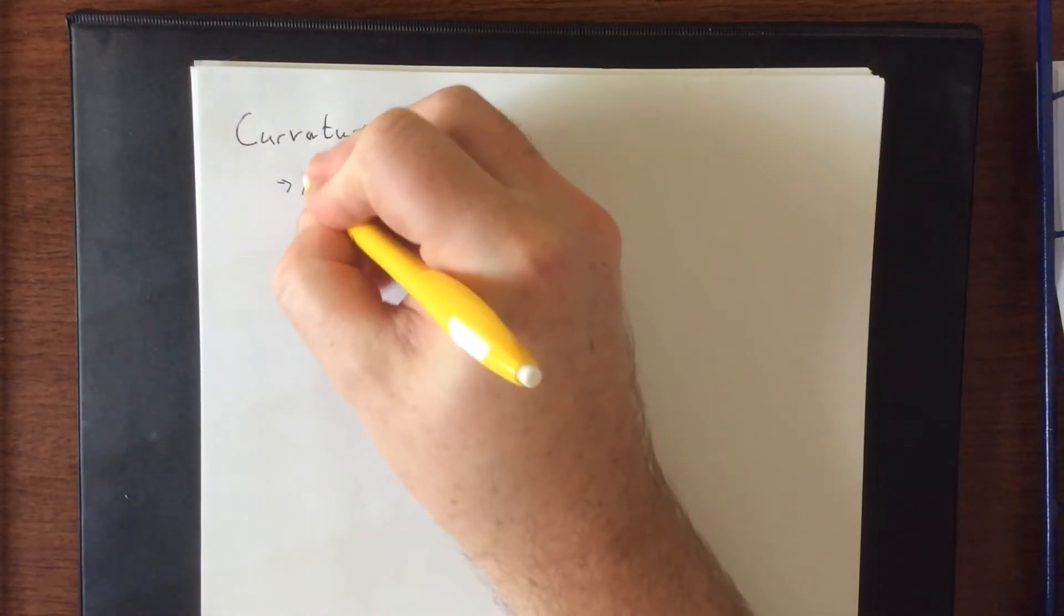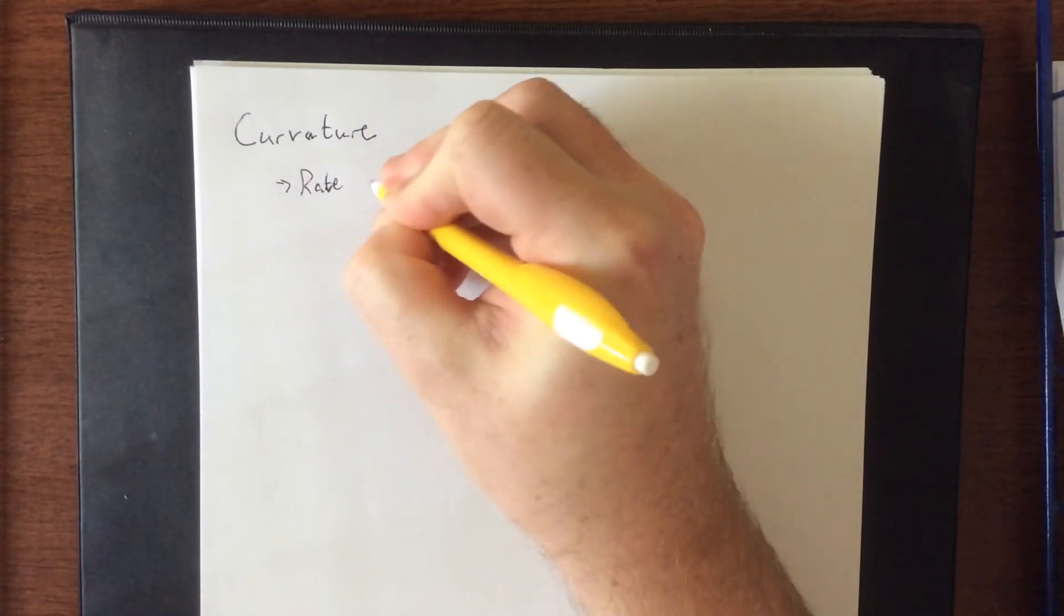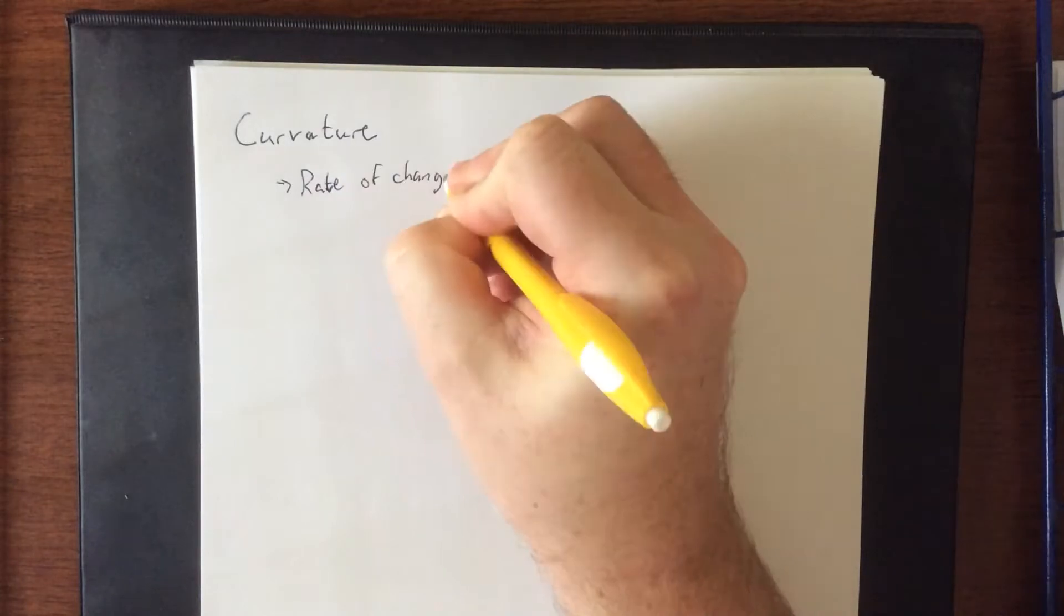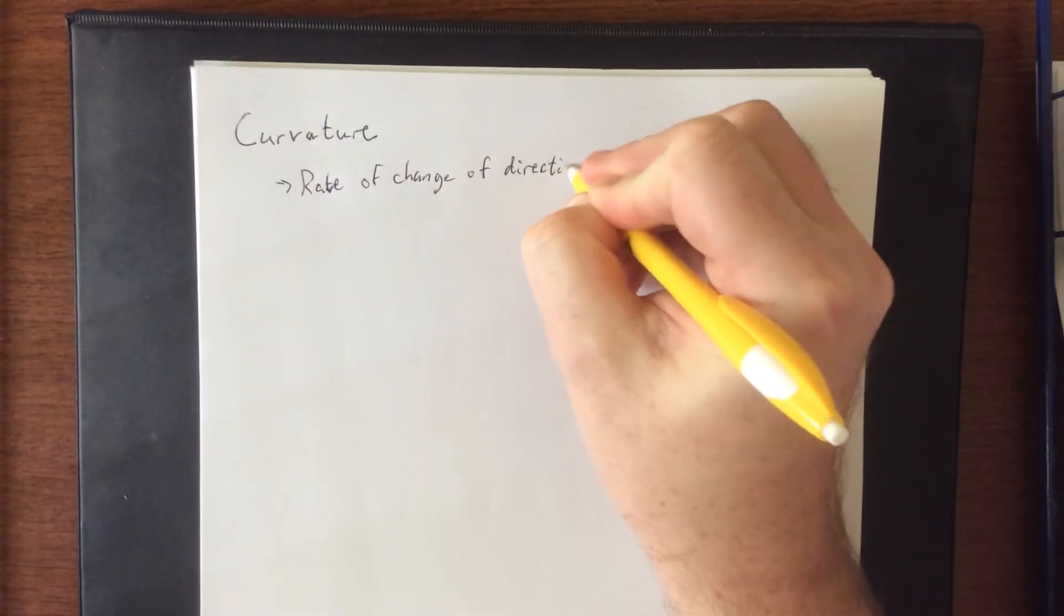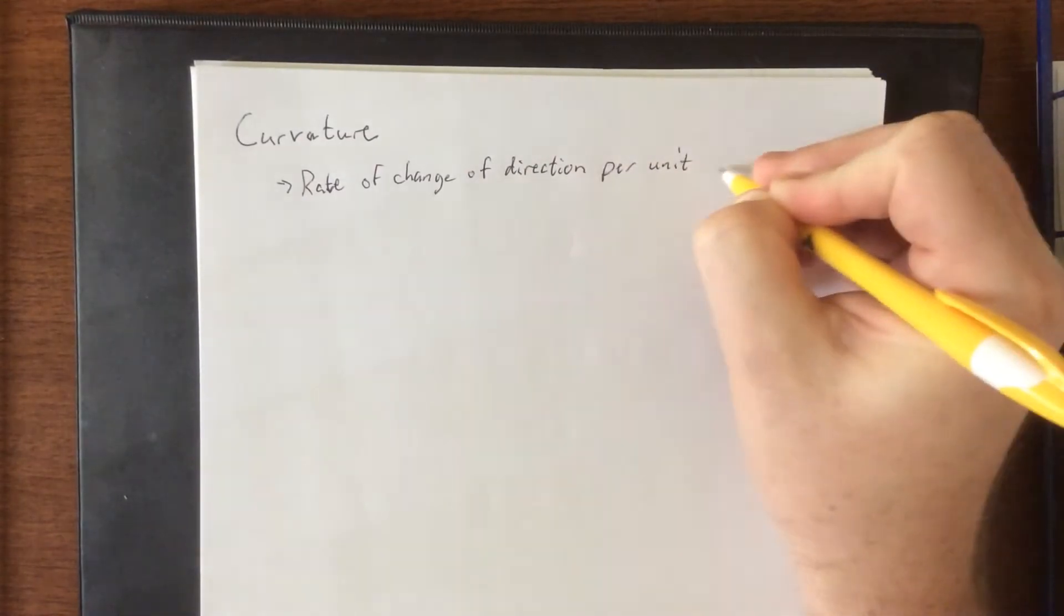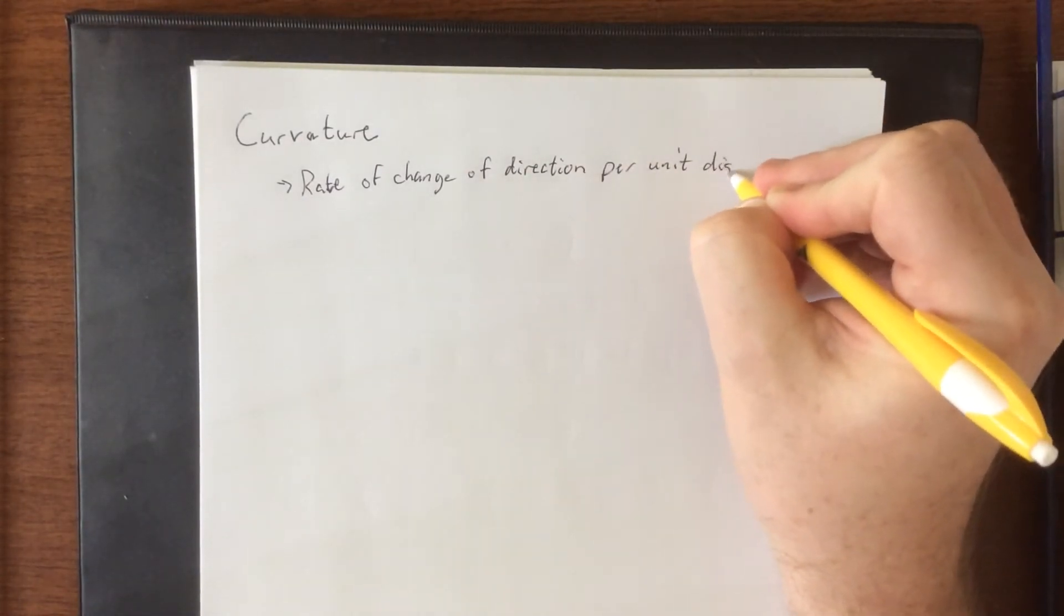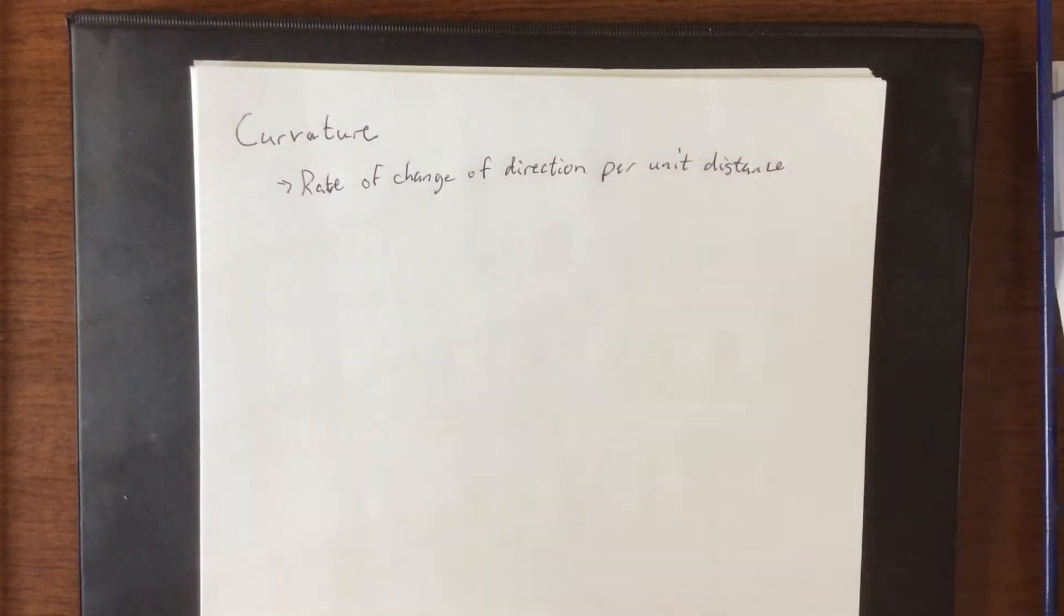Curvature is the rate of change of direction per unit distance traveled. I'm just going to say per unit distance because we already know from a previous video that I don't actually know how to spell the word traveled, despite the fact that that's pretty important.